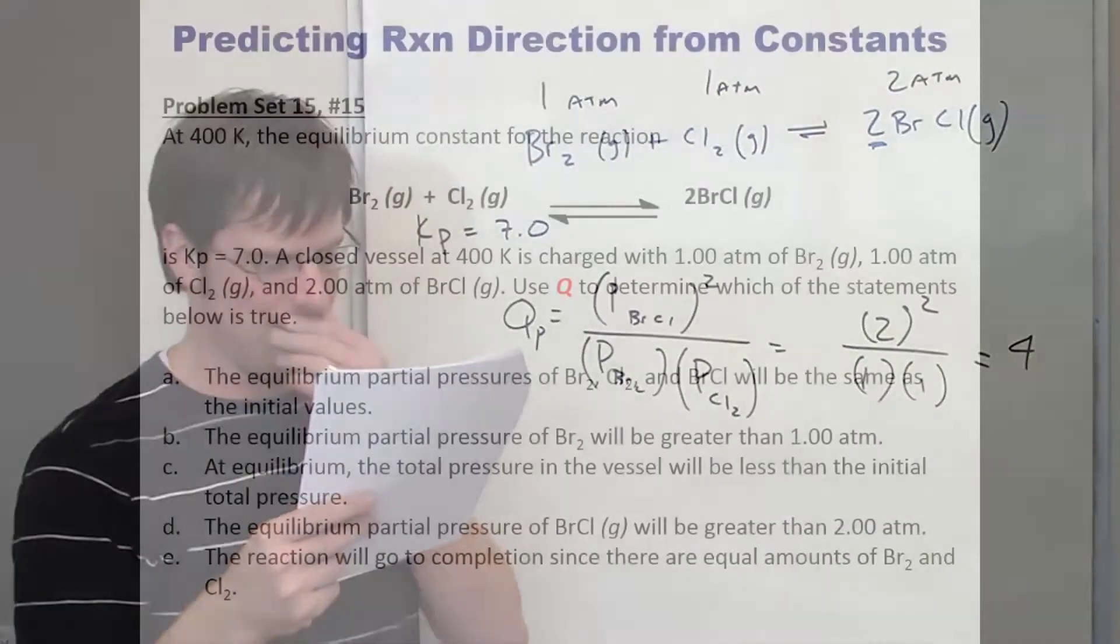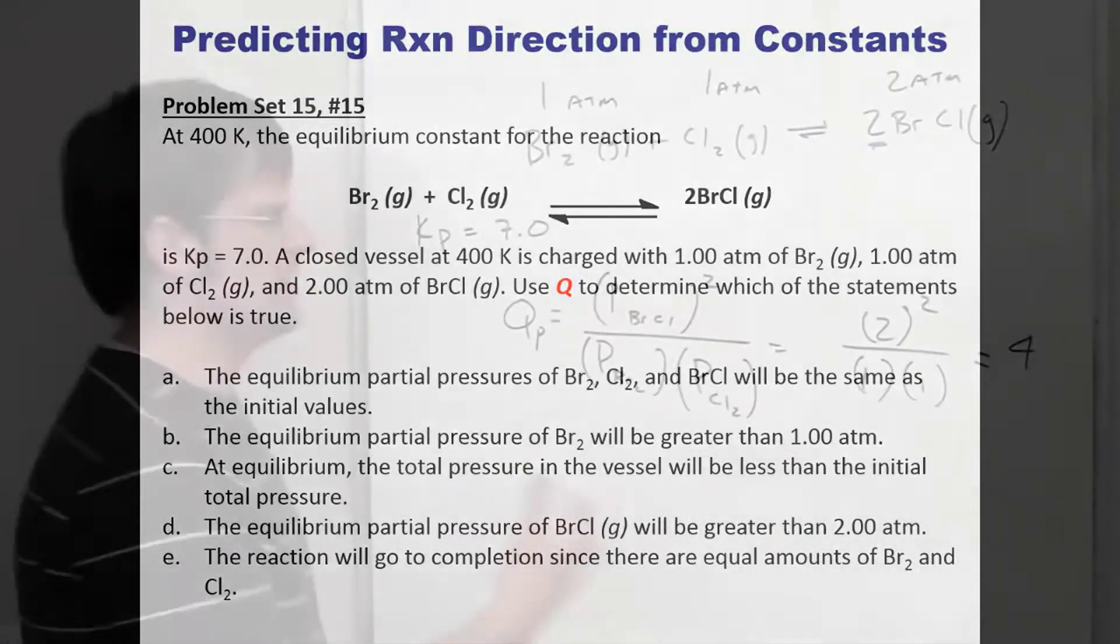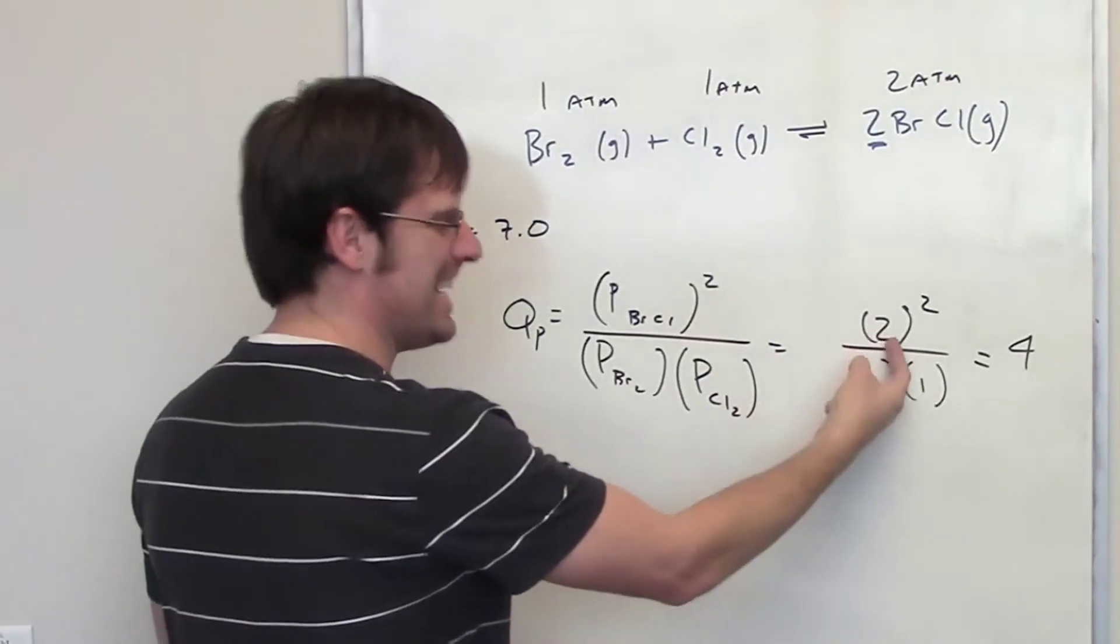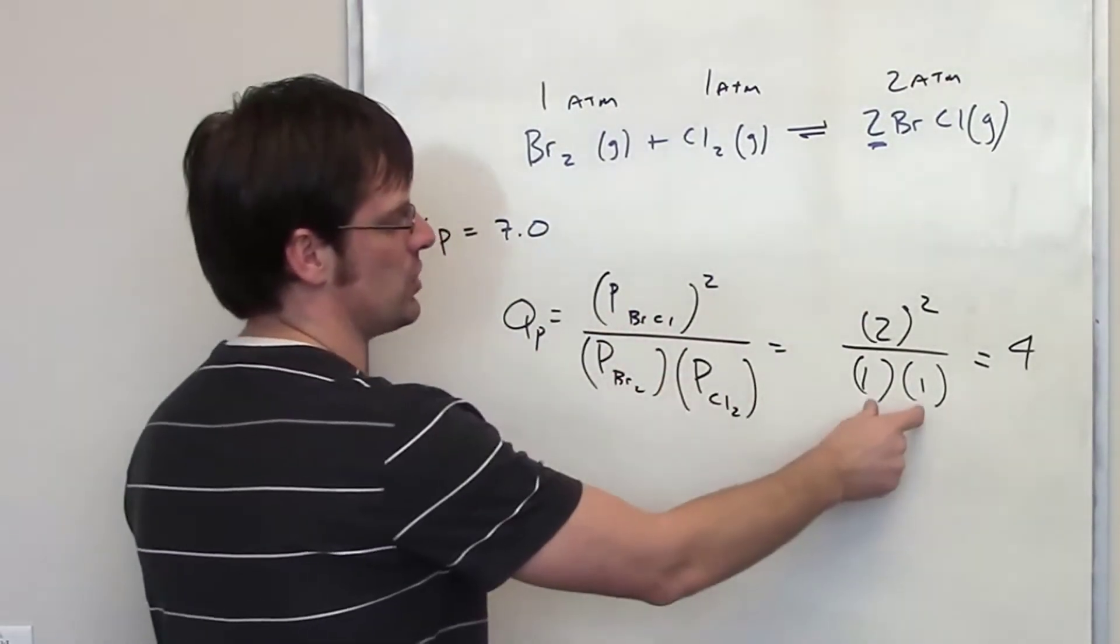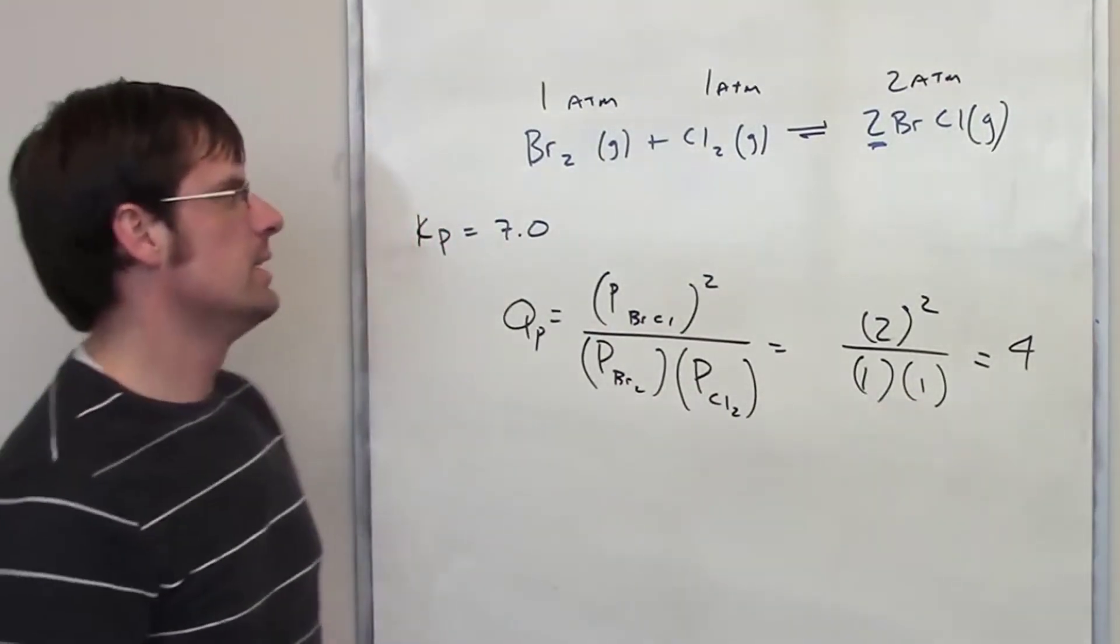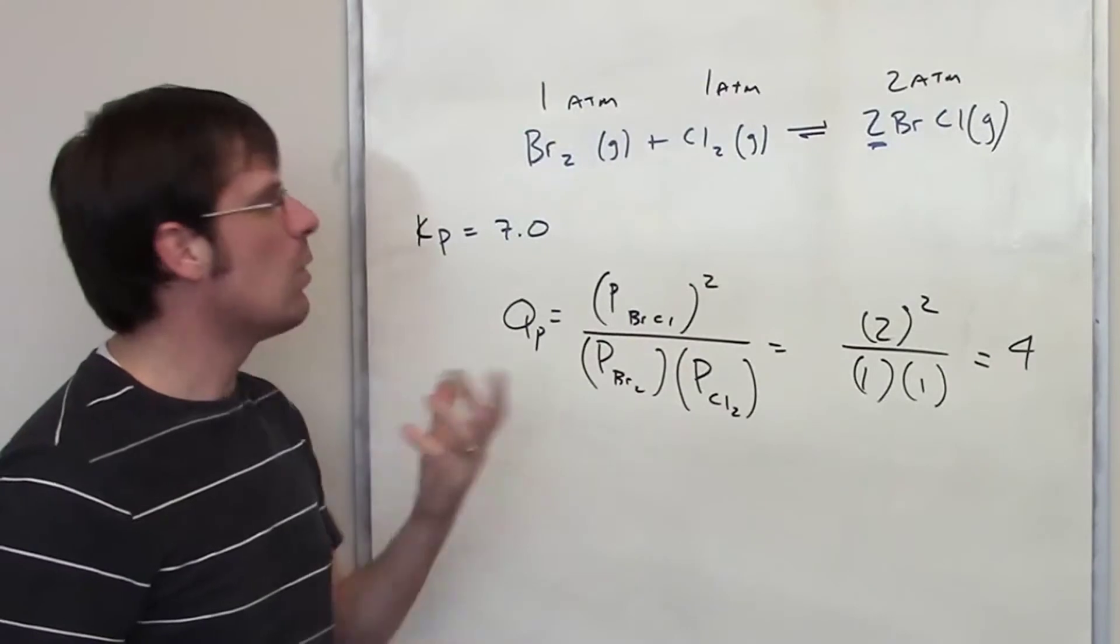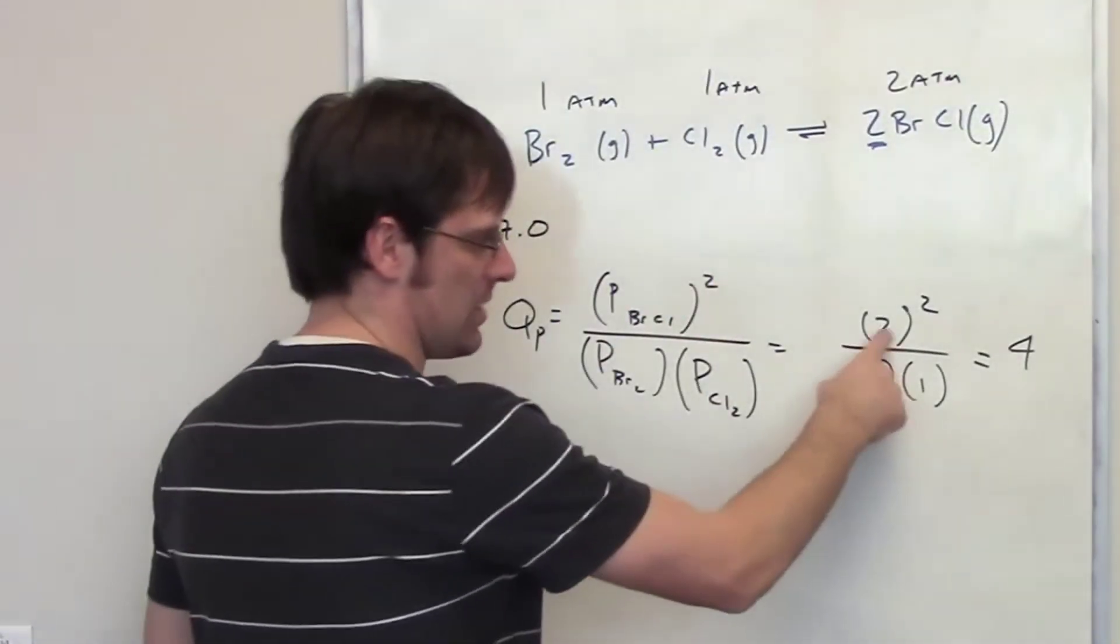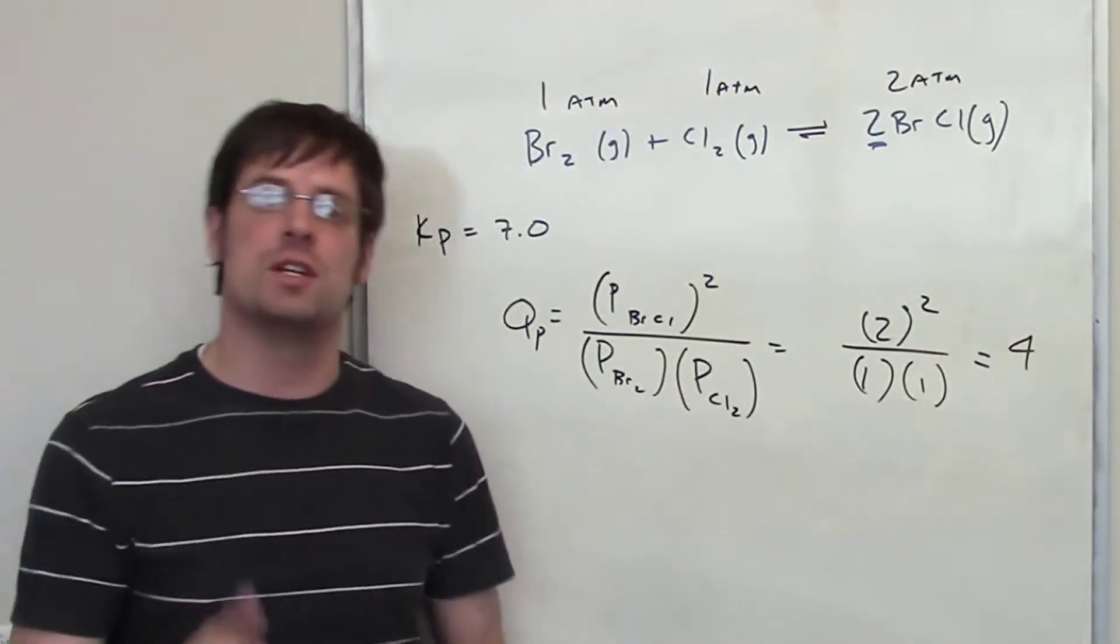Let's look at option C. At equilibrium the total pressure in the vessel will be less than the initial total pressure. At the outset that is somewhat unclear. We can imagine once again that we need to increase the pressure of the numerator while decreasing the pressures of the denominator components. What will the total pressure of all of those together in the system be? Well I think they're probably going to have to end up being larger than they were at the outset because at the outset they just give you a Q of four. Let's move on to option E.